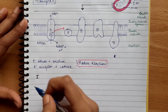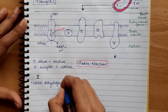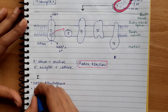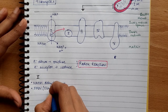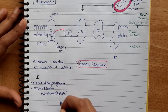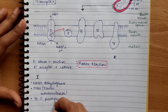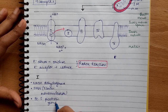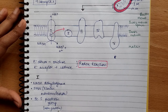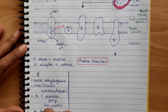Complex 1 is also known as NADH dehydrogenase. It contains FMN, which is also known as Flavin Mononucleotide, and an Iron-Sulphur prosthetic group. These are non-protein molecules that aid in protein activity. Flavin is derived from Riboflavin, which is Vitamin B2.